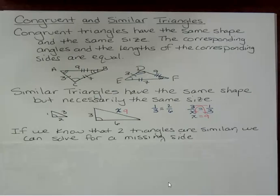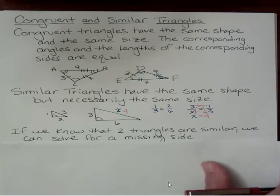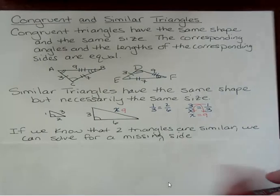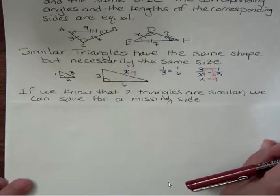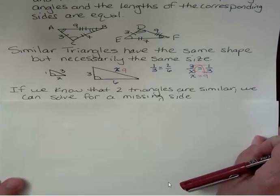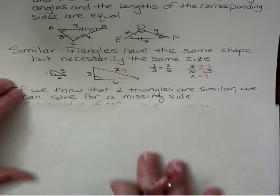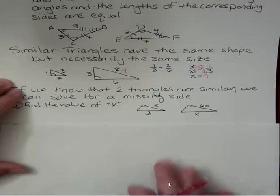Okay if we know that two triangles are similar we can solve for a missing side which is what we just did. And so now I would ask you to try that. Again always I forget to say it but I mean to say pause the video, try it on your own, come back and see how you did.